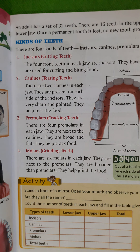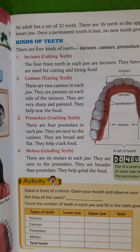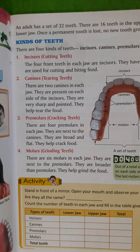Temporary teeth start falling by the age of 6 years, and those temporary teeth are also known as milk teeth. Permanent teeth are the new teeth that come up after 6 years old and stay with us. An adult has 32 teeth — 16 in the upper jaw and 16 in the lower jaw.